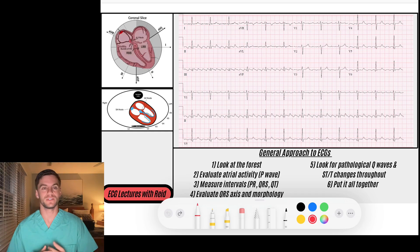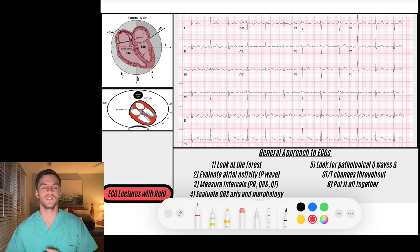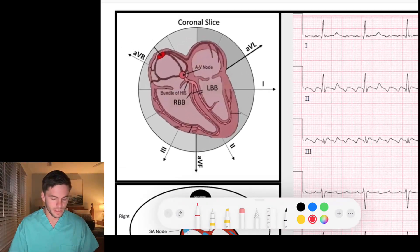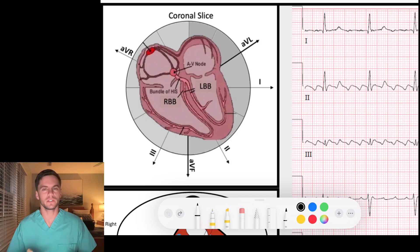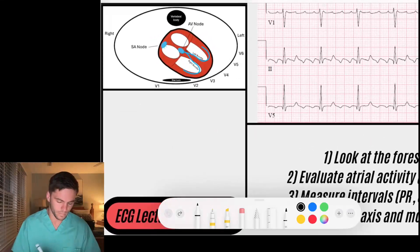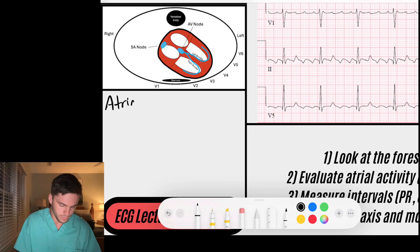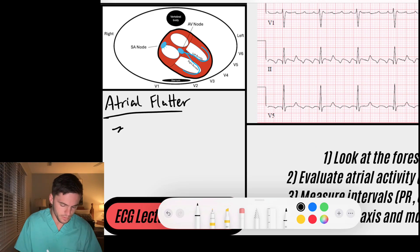Atrial flutter, as its name suggests, is an atrial tachyarrhythmia that is formed by creating some type of flutter wave morphology. Atrial flutter is a rhythm that arises from the atria, and it most often arises from a re-entry pathway. So we're going to talk about re-entry circuits — specifically, a re-entry pathway within the atria.